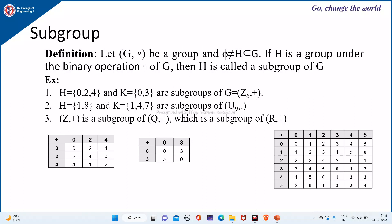For example, H = {0, 2, 4} and K = {0, 3} are subgroups of Z6 under addition. To prove that they are subgroups, we use the Z6 addition table, and we have already proved that any Zn under addition is a group.